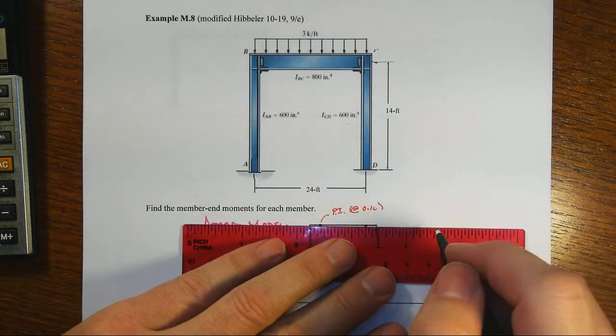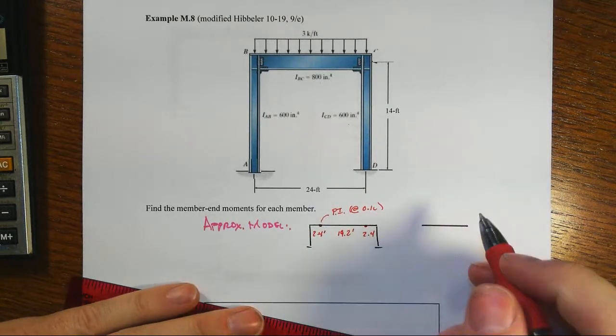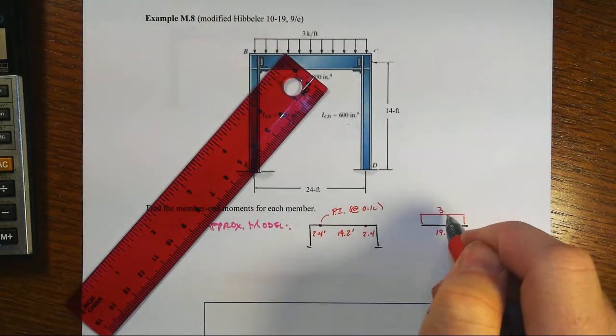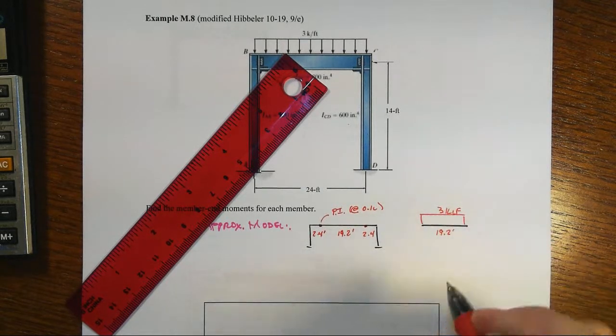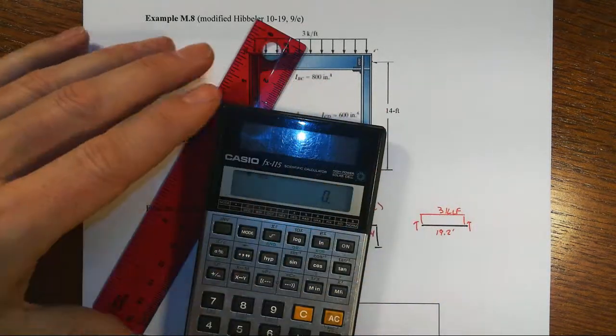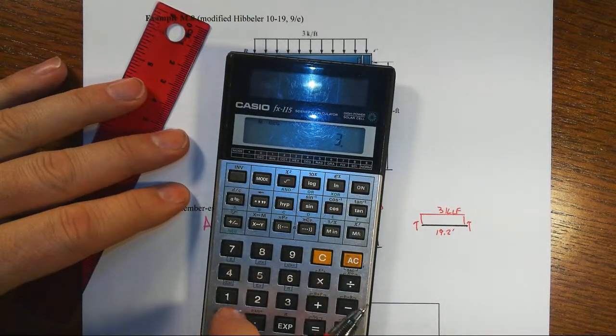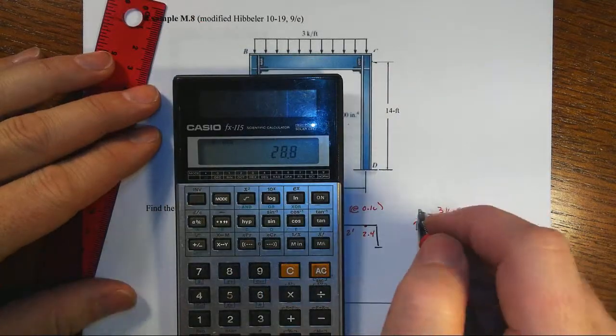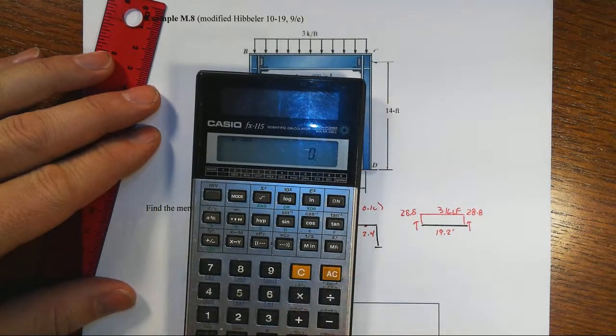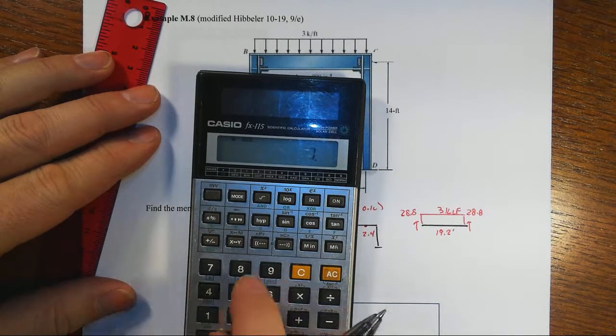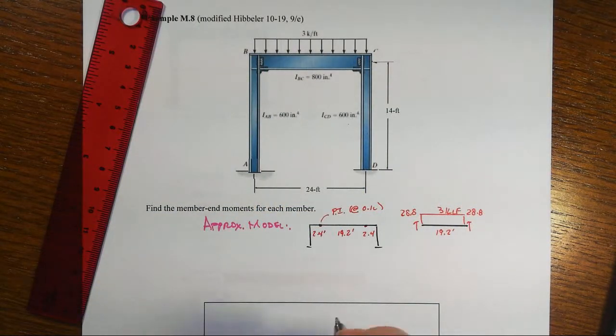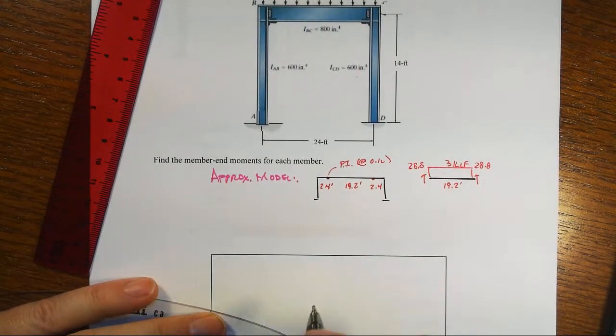Now let's look briefly at that middle portion that is only 19.2 feet long. It has the distributed load on it, 3 kips per foot, and we'll have end shears. Notice no end moments because that's at the inflection point location. It's going to be half of that total load, 3 times 19.2 divided by 2 will give us 28.8. The maximum moment in that segment would be WL squared over 8, so 3 times 19.2 squared divided by 8 or a maximum moment of about 138.2 happening right here in the middle.